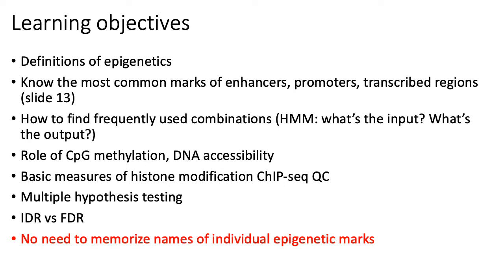It's important to understand how hidden Markov models are used to find frequently used combinations of epigenetic marks, mainly because a lot of histone modifications and even DNA methylation are very context-dependent in terms of their effects on gene regulation. A large part of the challenge of epigenomics is understanding how the cell recognizes different modifications within different contexts and how that impacts gene regulation.